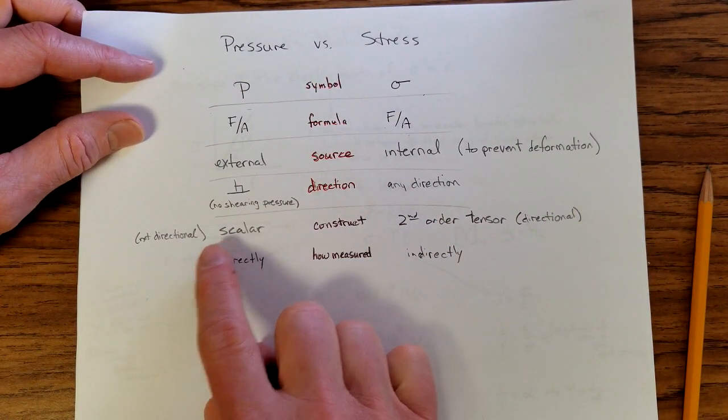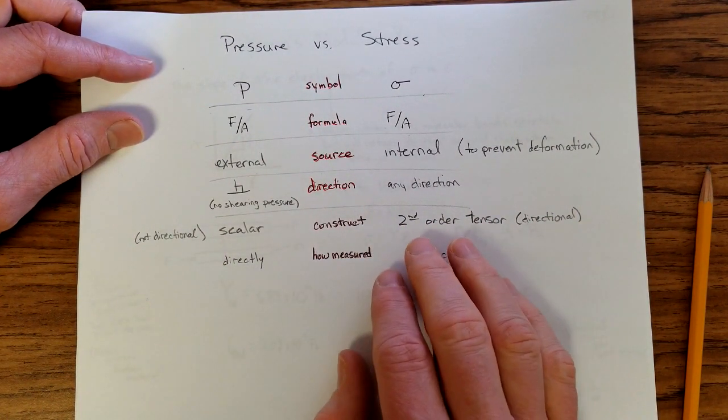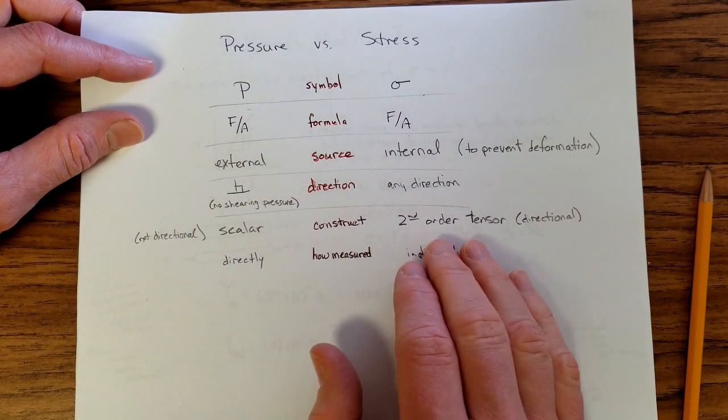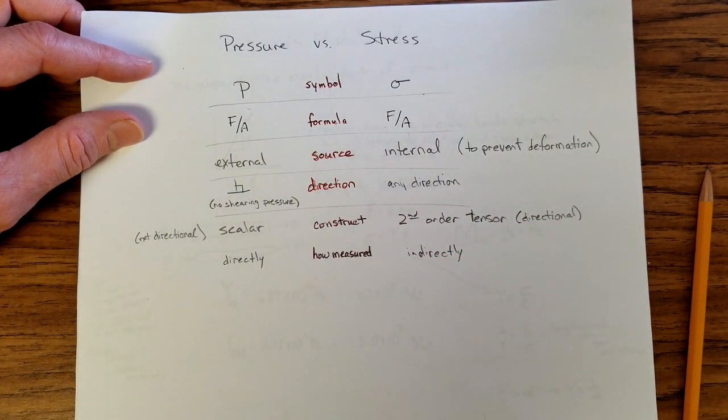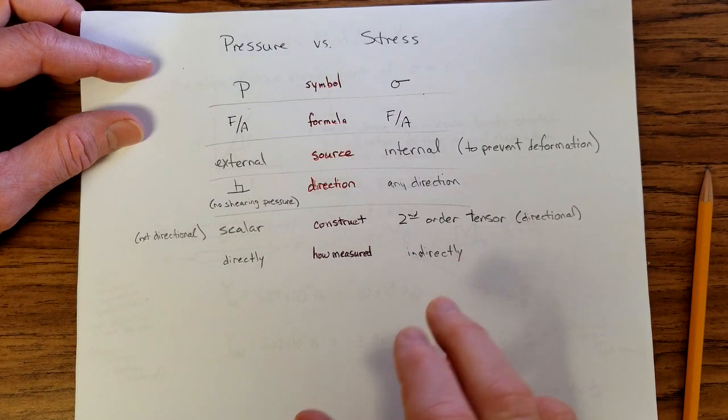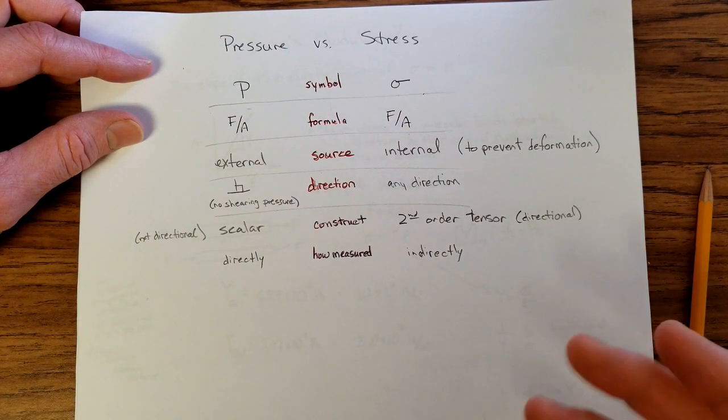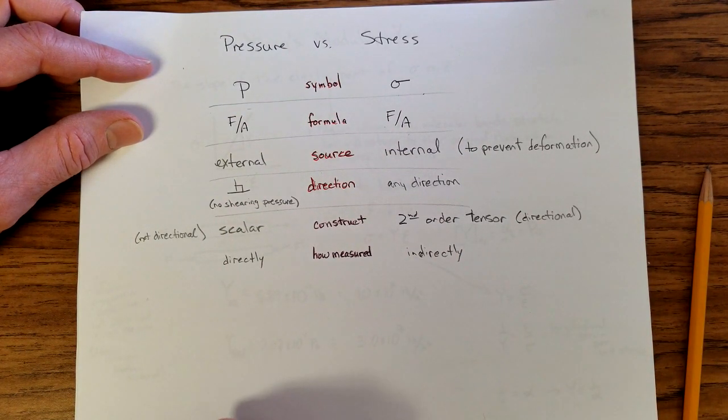Pressure is also a scalar. There's not a particular direction. And stress officially is a second-order tensor. There's a directional aspect to it. First-order tensors are vectors. Second-order tensors, you're just adding another dimension to the information.